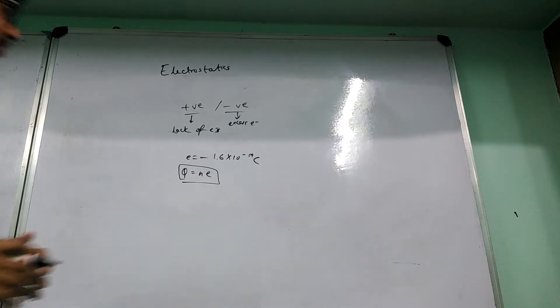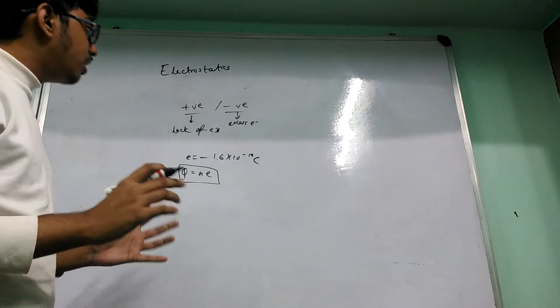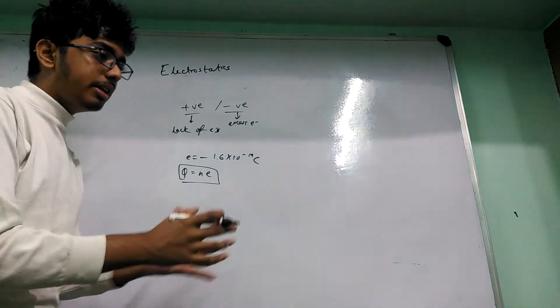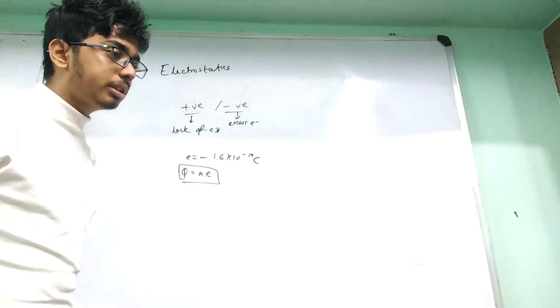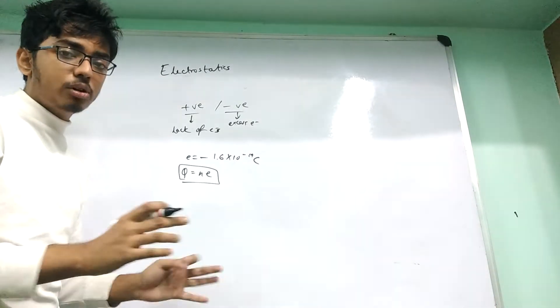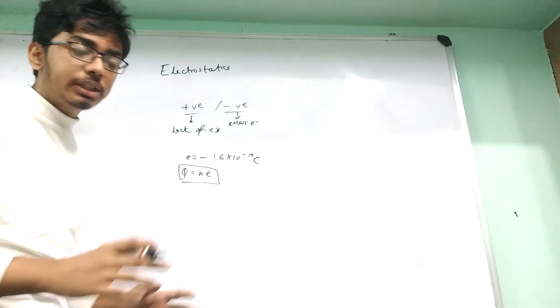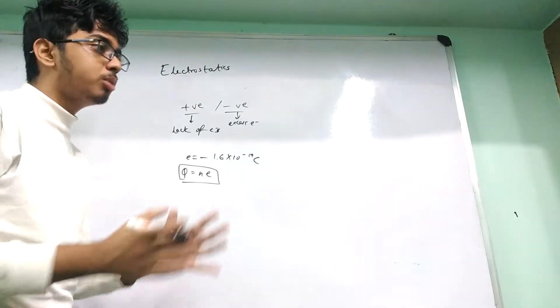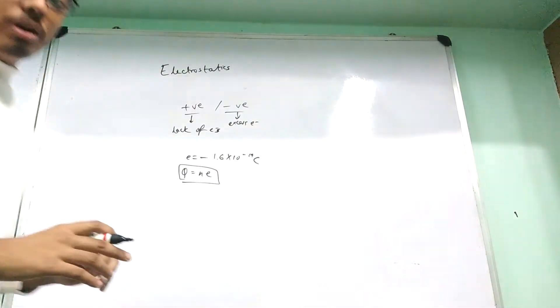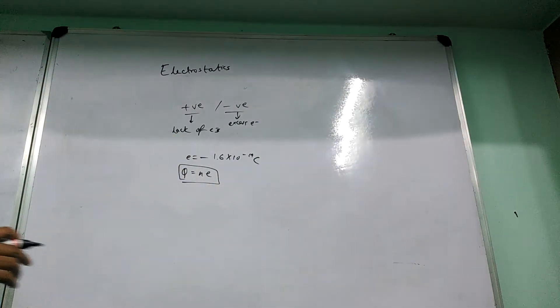Mass is associated with gravity. Gravitational force — so far we don't know what kind of force it is fundamentally. We have not found a boson for gravity. Scientists have attempted to unify gravitation and electrostatics, but we don't need to go into that kind of discussion in this video.